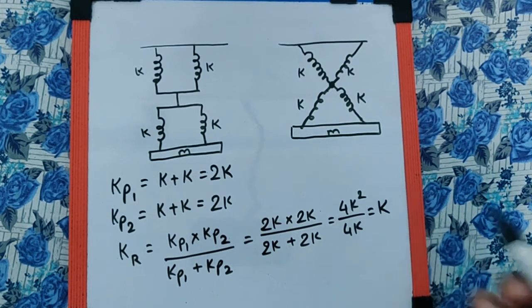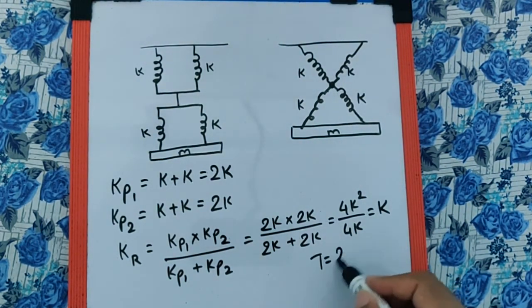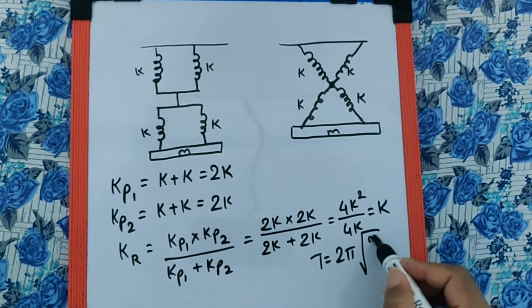which is nothing but K. And so your final formula will be T is equal to 2 pi root of M by K.